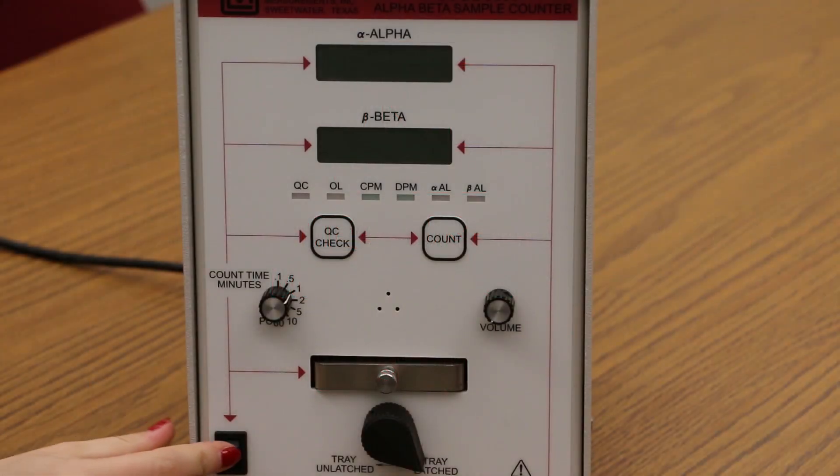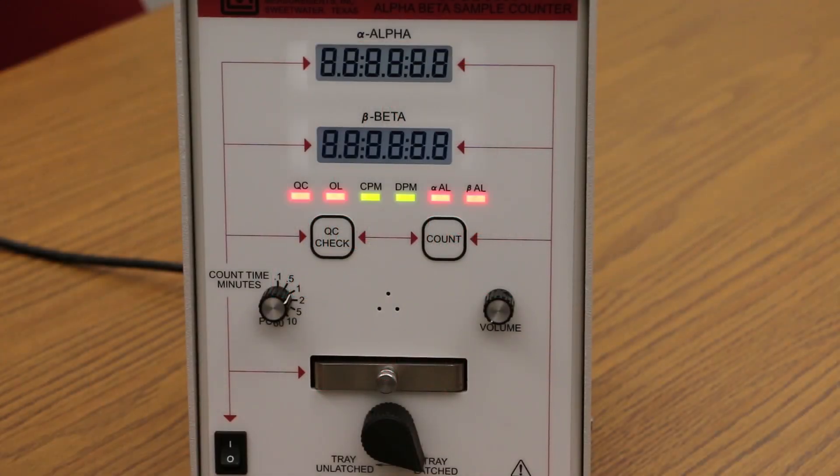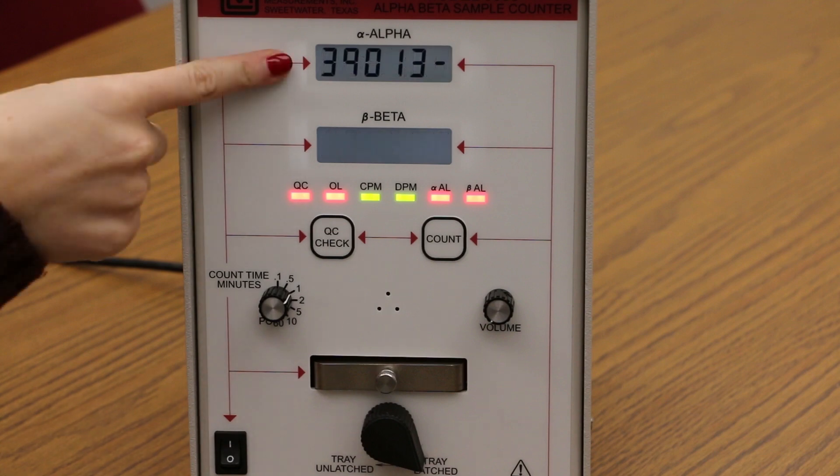Basic use. Turn the power switch on. The readout LEDs will illuminate and the instrument will display all eights and colons as a test of the segment. Then it will display the five digit firmware number. Next it will display the version number. The instrument is now ready for use.